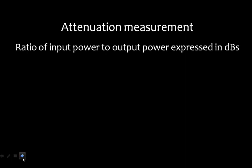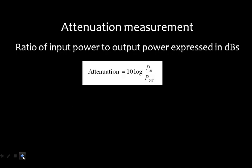Now we'll talk about the attenuation measurement. First we'll discuss what attenuation means, then we'll talk about measuring it. Attenuation is nothing but the ratio of input power to the output power. As with gain you calculate output by input power, attenuation is exactly the reverse. The ratio of input power to output power expressed in dB is called attenuation, so attenuation equals 10 log(P_in / P_out).